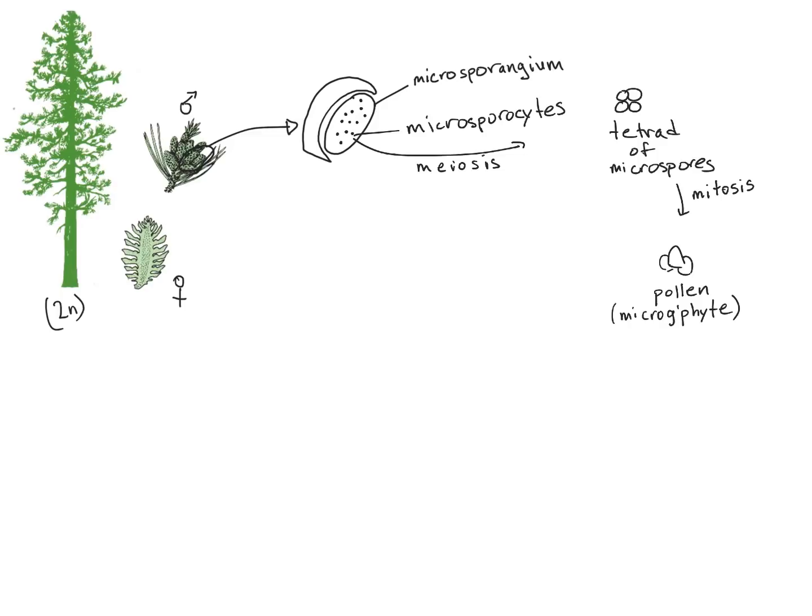It's important to keep in mind that each of these microsporocytes that you see is going to undergo division. So these microsporocytes undergo division to form a tetrad of microspores, each one of which can divide into a pollen grain. So that goes a long way in explaining why there's so much pollen produced by conifers. Coupled with this is the fact that the pollen of conifers is oftentimes air dispersed. And so there are accessory structures on the pollen grain called air sacs.